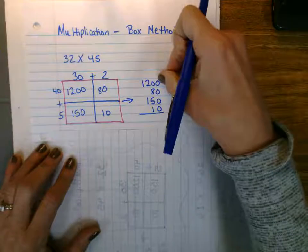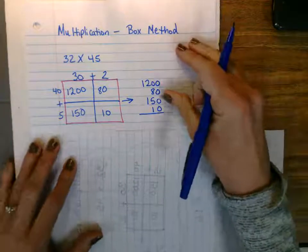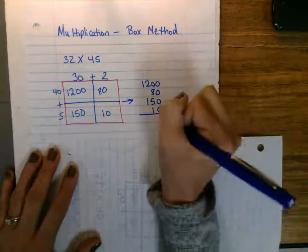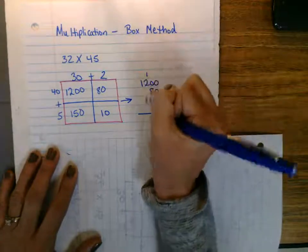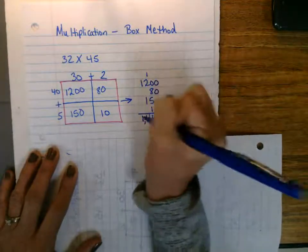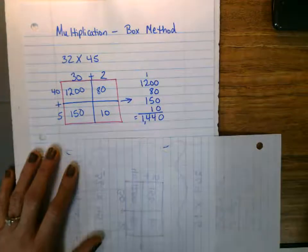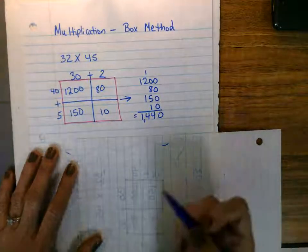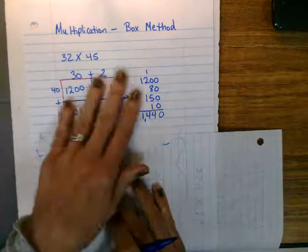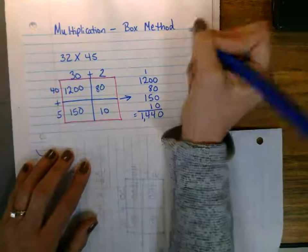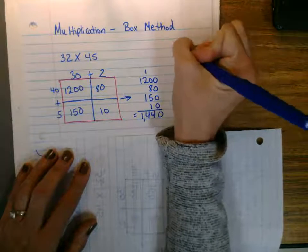I usually like to do greatest to least, but it does not matter. As long as they're lining up their ones, their tens, they will get a final product. So 1,440 is our final product.